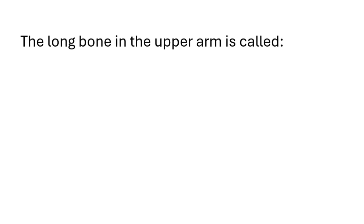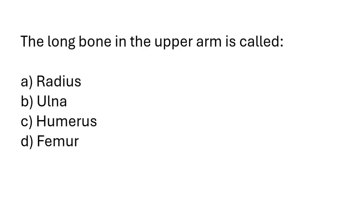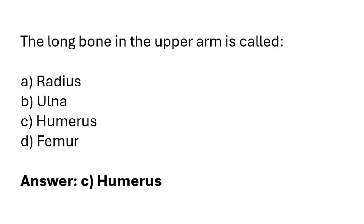The long bone in the upper arm is called: radius, ulna, humerus, femur. The correct answer is option C: the long bone in the upper arm is called the humerus.